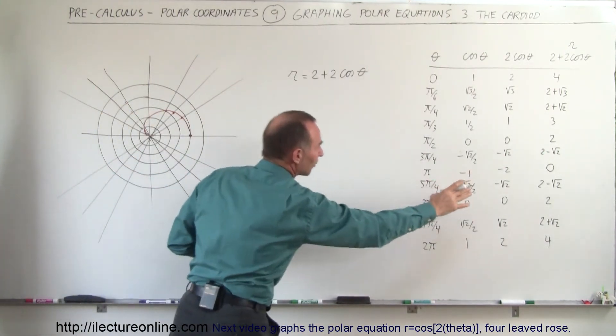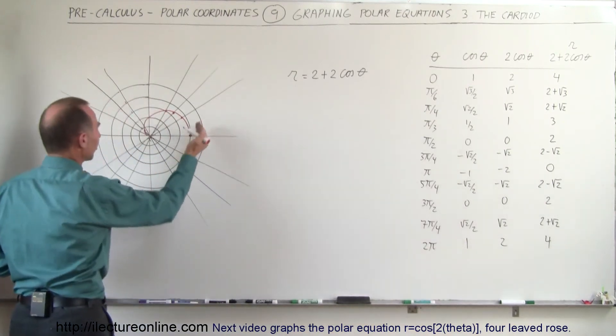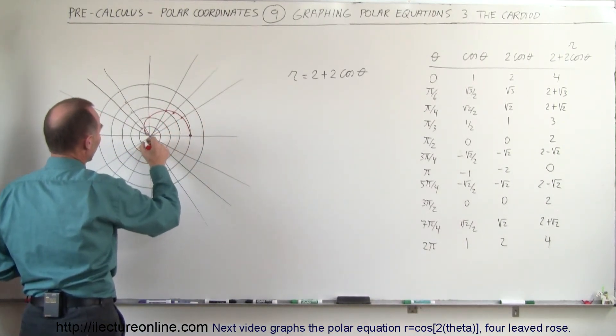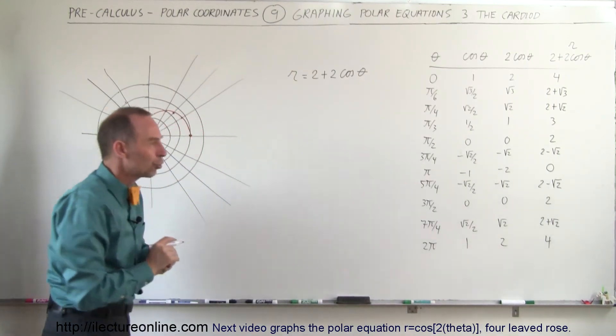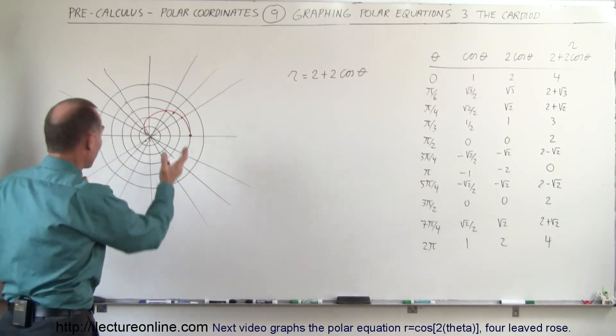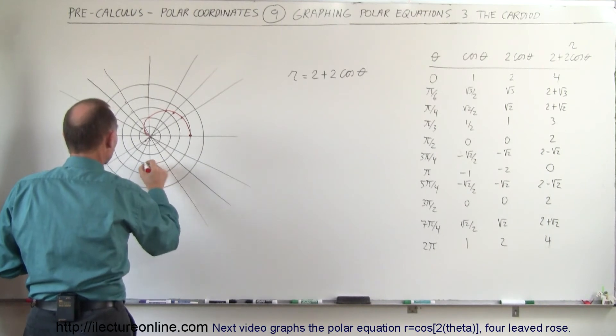Then moving on to 5π over 4, now it becomes back to 0.6. It looks like it's going to be a mirror image. So back to about here. Then at 3π over 2, we go back up to 2. So 3π over 2, that's over here. We go back up to there.